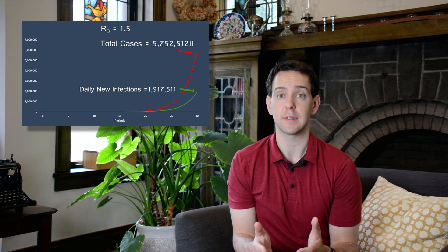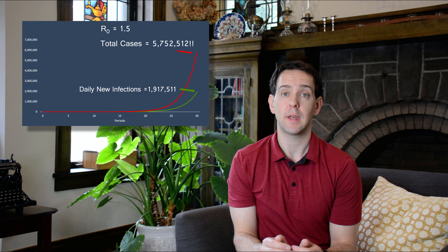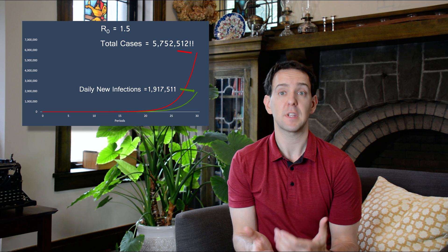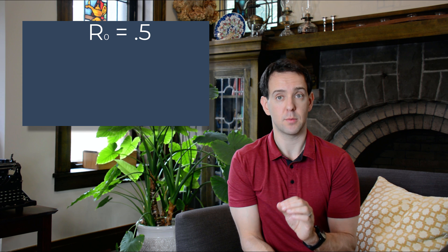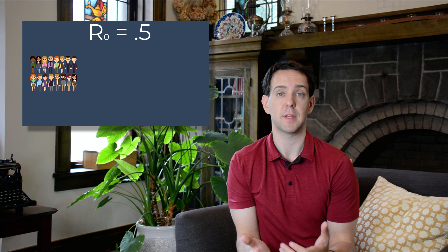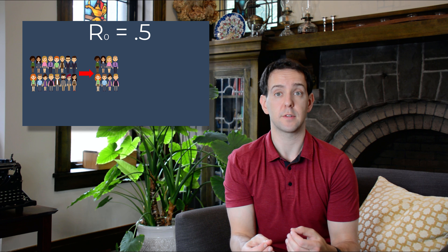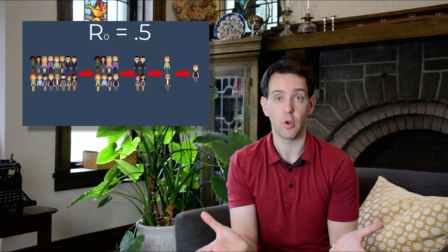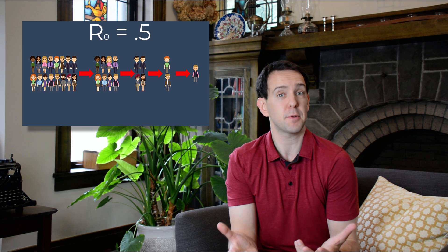With COVID-19 and any other disease, the name of the game is getting the R0 number down as low as possible. In fact, if the number drops below 1, the disease will eventually die out. With an R0 of 0.5, each person infects on average 0.5 others. Starting with 16 infected people: they infect 8, who infect 4, then 2, then 1, and the disease is gone. A small R0 number means the disease is so not contagious that it will disappear quickly.